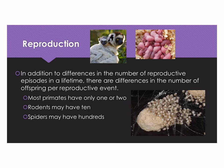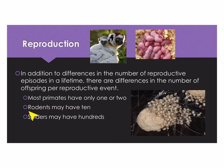Another thing to consider is the number of babies born in a reproductive event. For species that reproduce more than once, or even those that reproduce just once, how many babies are produced? Most primates have just one or two babies each round of reproduction. By contrast, rodents might have 10 to 15 babies. Spiders may have hundreds of babies in a reproductive bout. So there's a variation in the number of offspring per reproductive event.